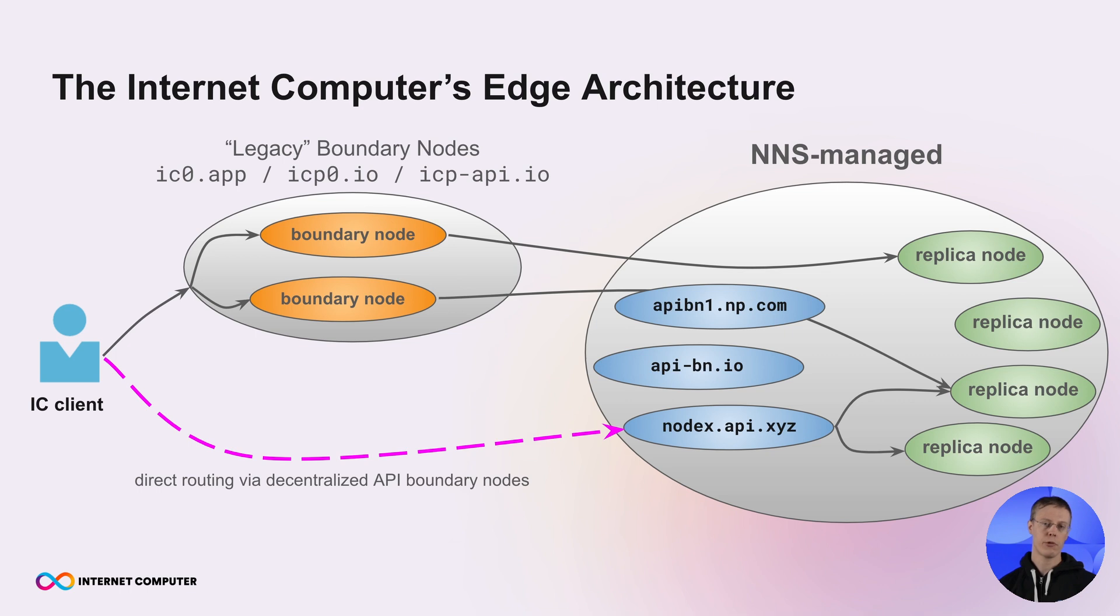You could, for example, just randomly pick one. You could do some health checks and only pick among the healthy ones. Or you could do something more sophisticated, like checking the health and latencies, such that you always choose an API boundary node that is close to you, which will give you a better user experience.